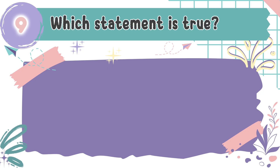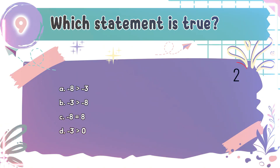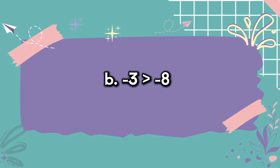Question number 9: Which statement is true? The choices are A. Negative 8 is greater than negative 3, B. Negative 3 is greater than negative 8, C. Negative 8 is equal to 8, D. Negative 3 is greater than 0. The correct answer is B. Negative 3 is greater than negative 8. On a number line, negative 3 is to the right of negative 8, which means it is the greater number.